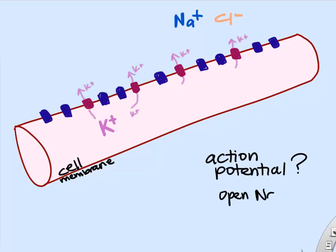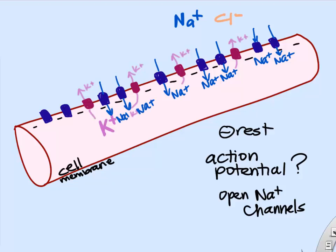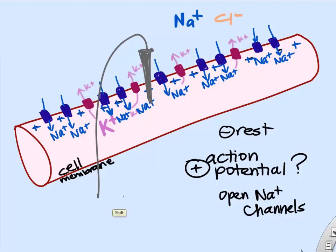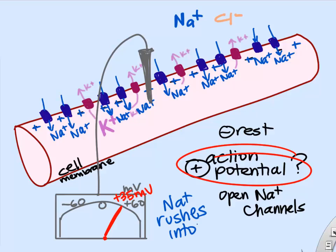Action potentials occur when we suddenly open a bunch of sodium channels. At rest the inside of the cell is negative, but if we open sodium channels, sodium rushes in due to diffusion. Because sodium is positively charged, a bunch of positive charge rushes into the cell and the inside actually becomes more positive, shifting from negative toward zero and then going positive — sometimes reaching positive 35 or 40 millivolts. All of that is due to sodium rushing into the cell.